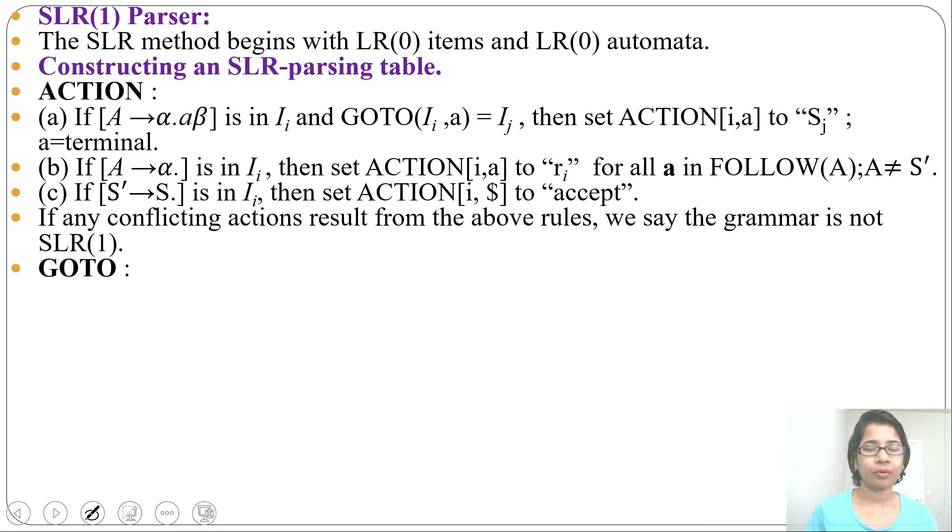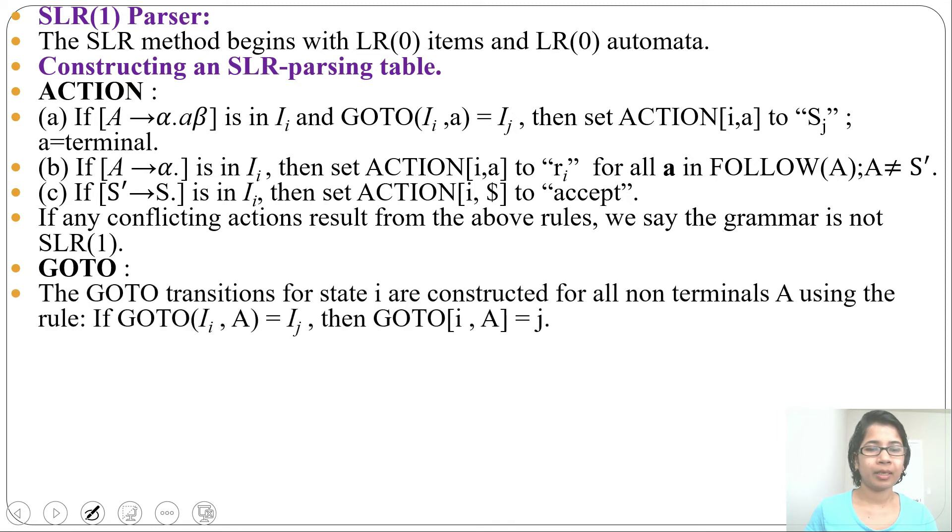These are rules for ACTION. Next, check for GOTO. GOTO will take all the non-terminals. And if GOTO(Ii, A) = Ij, then we'll simply write GOTO[i, A] = j.